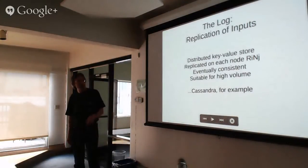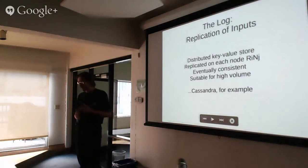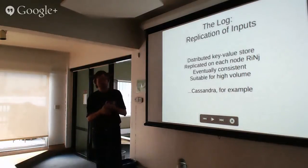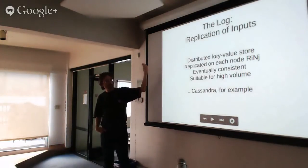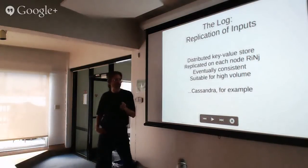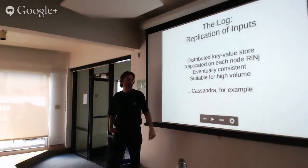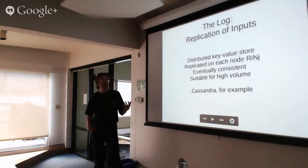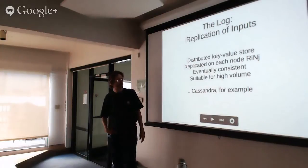What is this log? A few slides ago there was a list of ideas in Calvin, including: replicate transaction inputs rather than results. The log is what does that. It has to be a distributed key-value store, replicated across the system so every node can access it directly. It can be an eventually consistent system — it's just important that these batches eventually get to each node. It has to be suitable for high volume since the values are full transaction batches. Actual choices would be Cassandra or Dynamo.